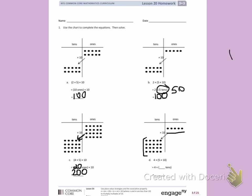5 times 10 is 50. When I write that in tens, I have 5 tens. So, I have 4 times 5 tens.